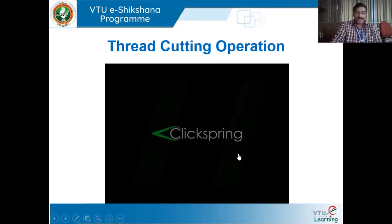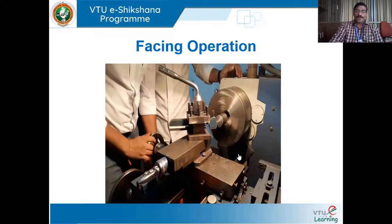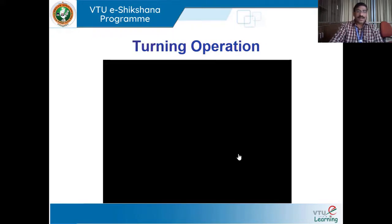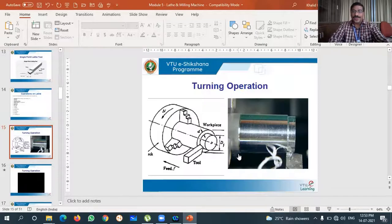This is the end of today's class. We have discussed four operations: turning operation, facing operation, knurling operation, and thread cutting operation. Remaining operations such as taper turning and drilling will be continued in the next class. Thank you very much for watching.